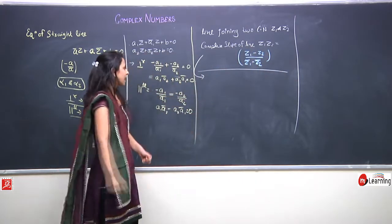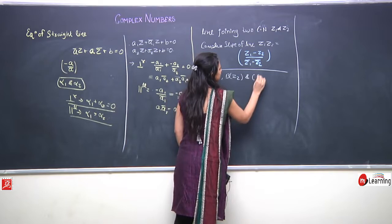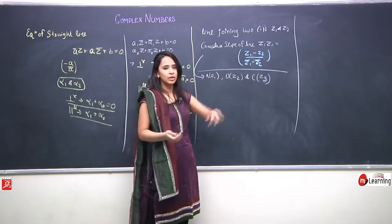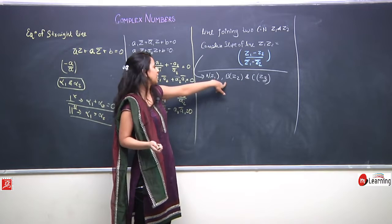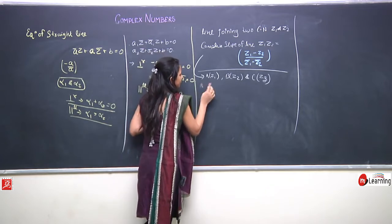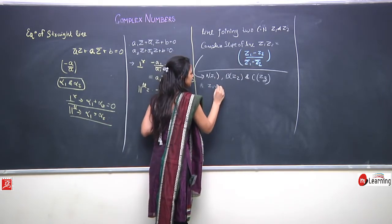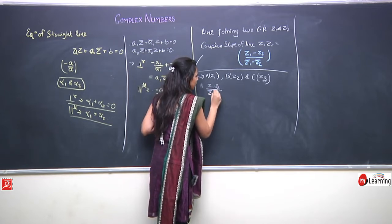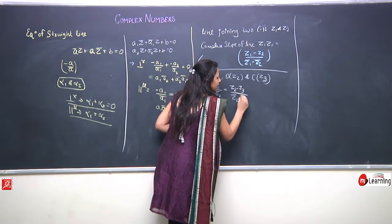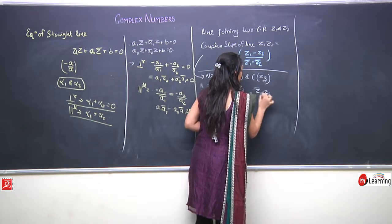Now let us derive a corollary. For three points A(z1), B(z2), and C(z3): if A, B, C are collinear, then the complex slope of AB equals the complex slope of BC equals the complex slope of AC. This gives us: (z1 - z2)/(z̄1 - z̄2) = (z2 - z3)/(z̄2 - z̄3) = (z1 - z3)/(z̄1 - z̄3). This is the condition for three points z1, z2, z3 to be collinear.